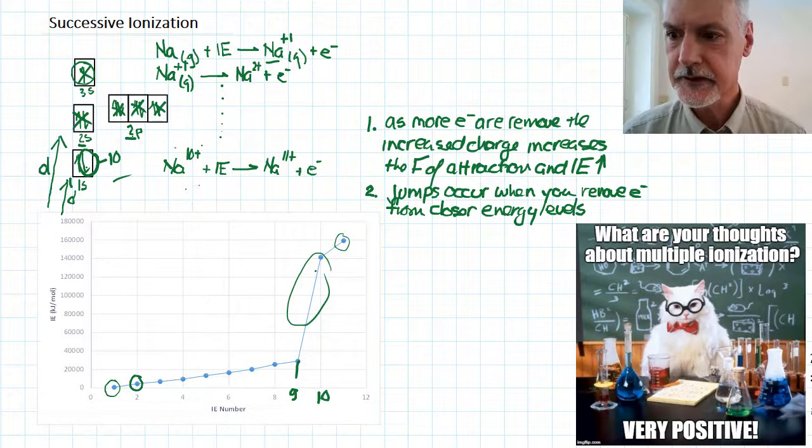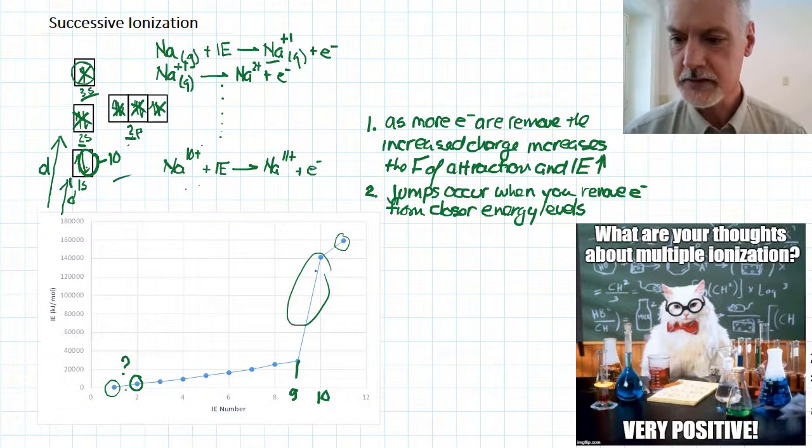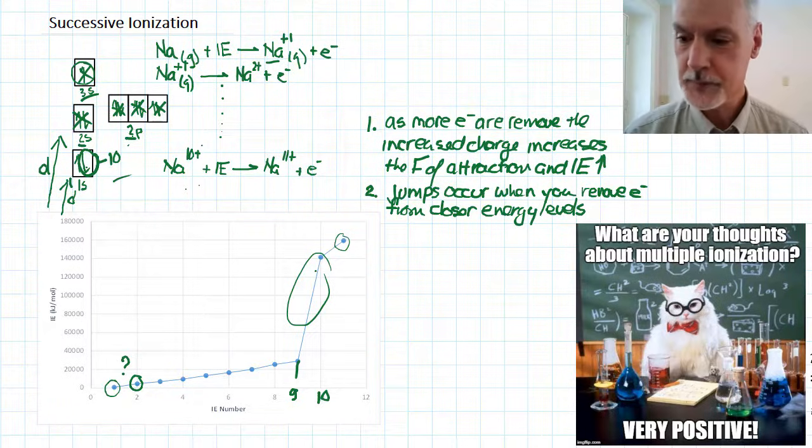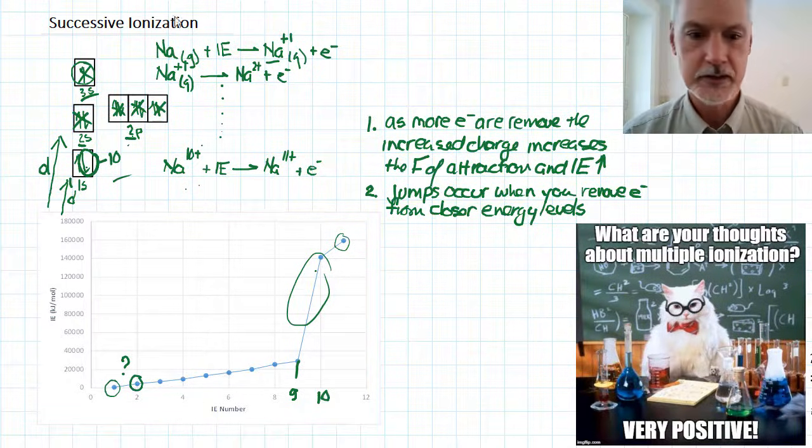Now, one might ask, when you remove this first electron, you are going from the 3s to the 2p—why don't you see a big jump down here? Well, there actually is a big jump. The problem is our choice of scale here. These numbers become so large they make this change look rather small. So here's what we can do about that.